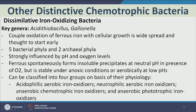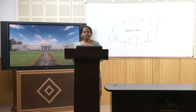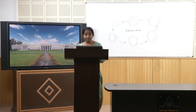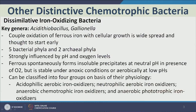Iron-oxidizing bacteria are strongly influenced by pH and oxygen level — very sensitive to oxygen. If oxygen is present with ferrous iron at the right pH, oxygen will chemically oxidize it, not allowing the bacteria to gain that energy for cellular growth. Ferrous iron spontaneously, meaning chemically, forms insoluble precipitates of ferric at neutral pH in the presence of oxygen. But if there is no oxygen, it is stable and iron-oxidizing bacteria can do their job. Or if oxygen is present, the pH must be really low for ferrous to be stable and bacteria to function.